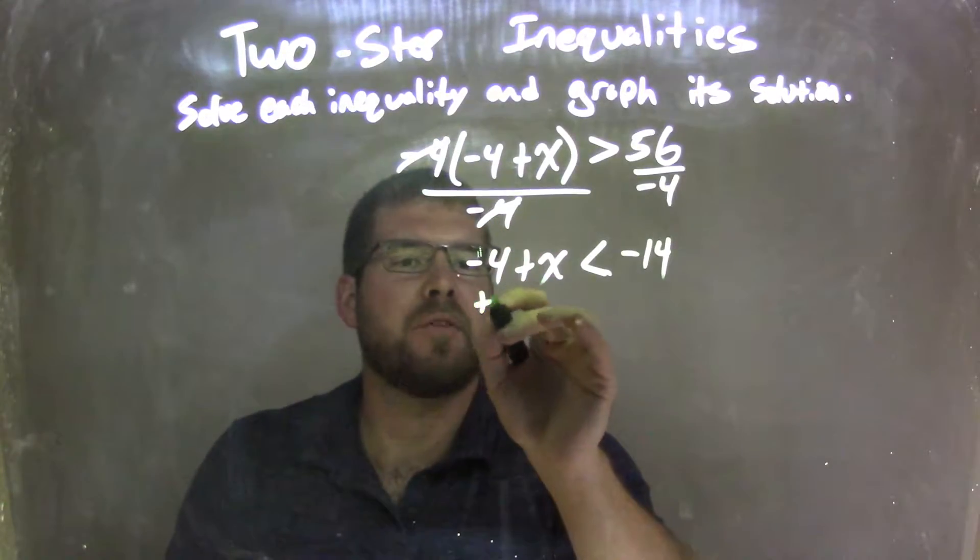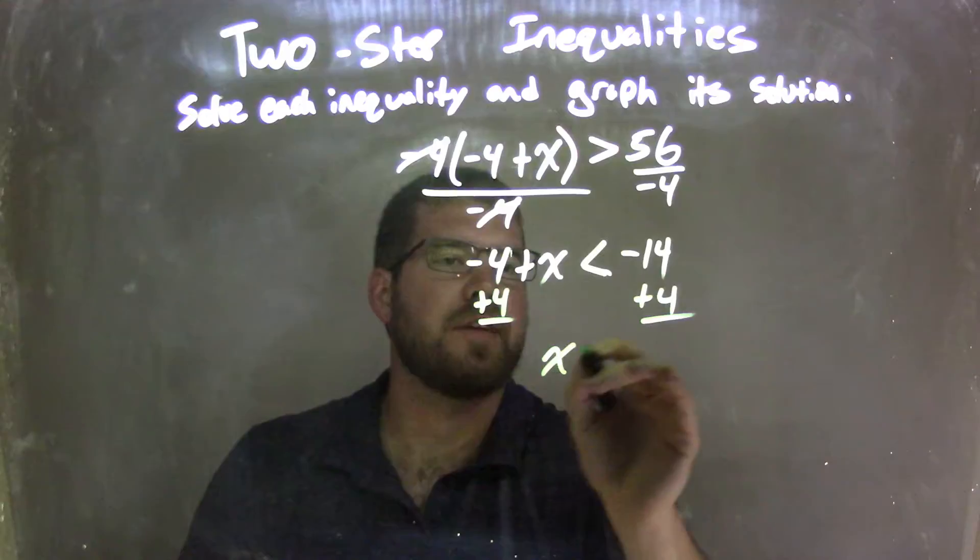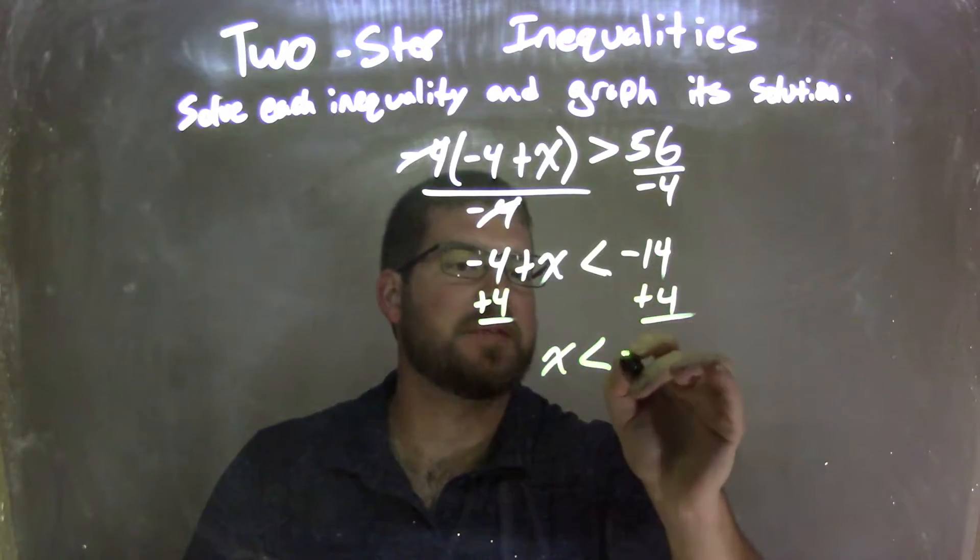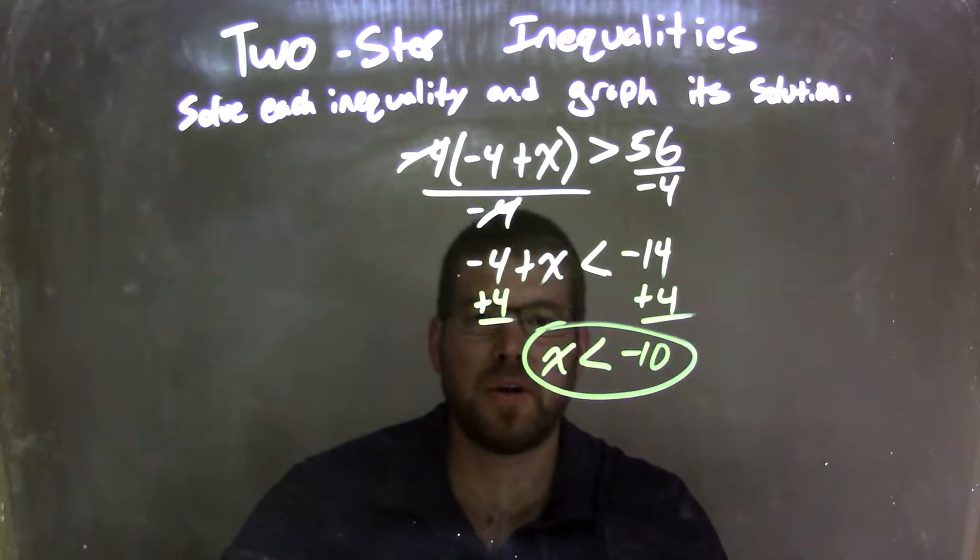Well, now I need to add 4 to both sides, leaving me with x is less than negative 14 plus 4, which is negative 10, and now x is isolated and we're good to go.